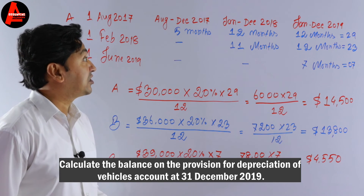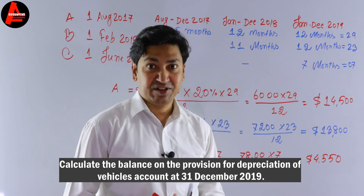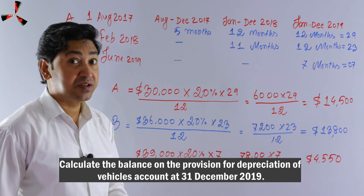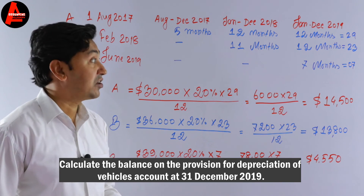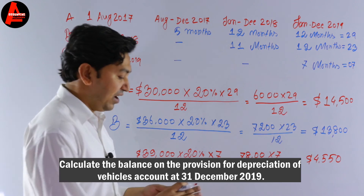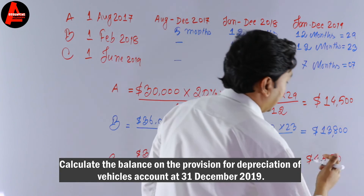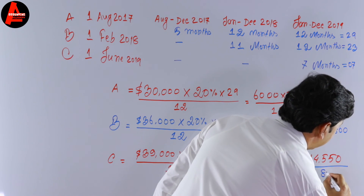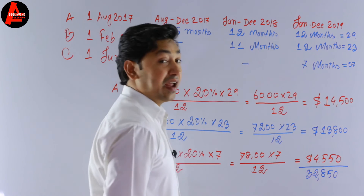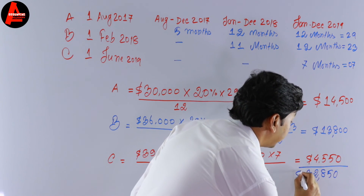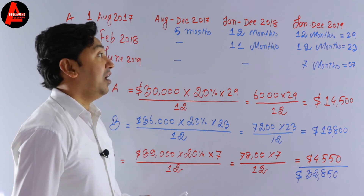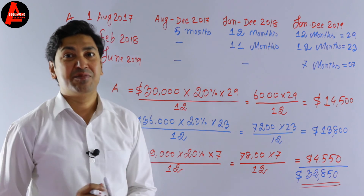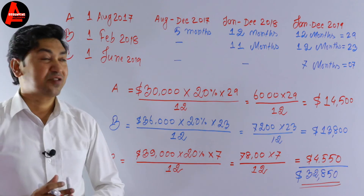We add all three depreciation values: $14,500 + $13,800 + $4,550 = $32,850. This is the total provision for depreciation for these three vehicles at the end of the financial year, 31st December 2019. This is how you calculate depreciation when you have multiple assets in a question.